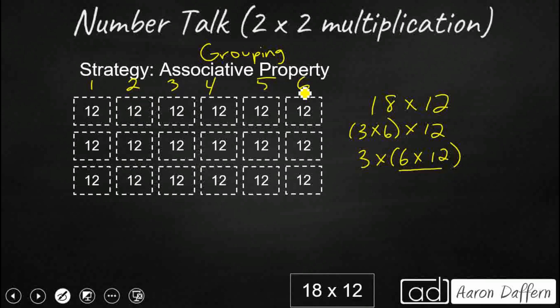I've got 6 groups of 12 right here. 6 times 12 is a basic fact. That's going to be 72. And then what I'm going to do is I've got three groups of 6 groups of 12 right there. So I'm just going to skip count by 72. So I've got 144, and then I've got 216. So that's a little bit easier, just 72 three different times.